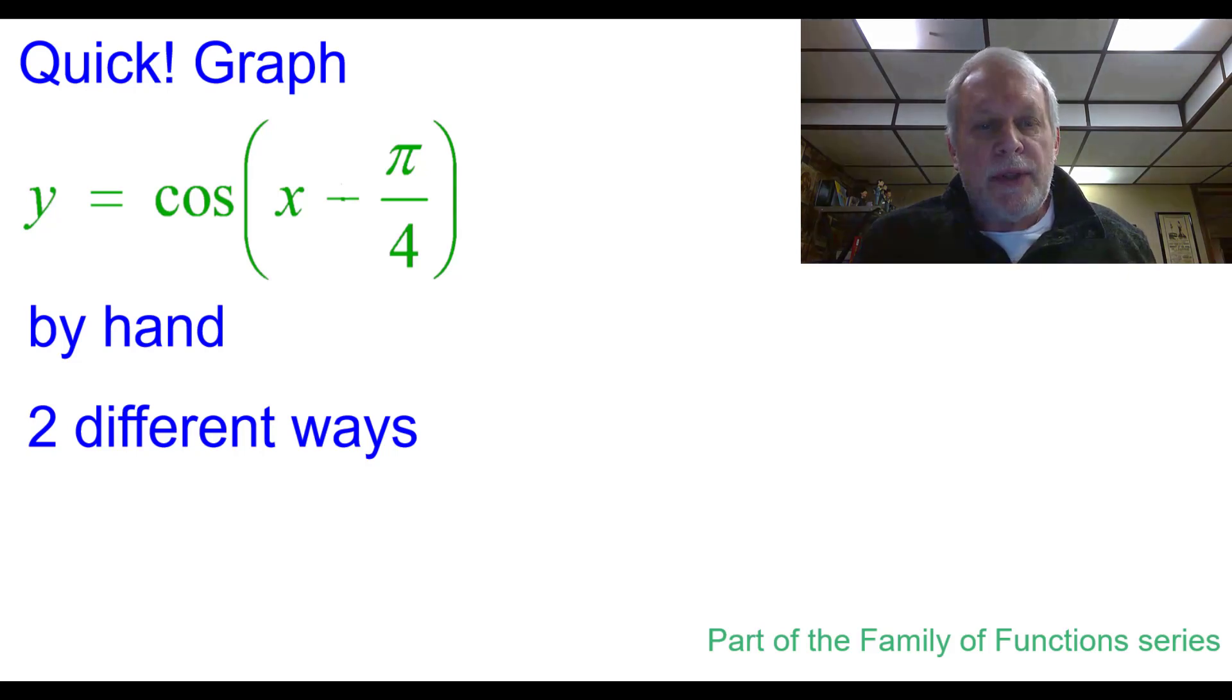Quick, graph y equals the cosine of the quantity x minus pi over 4, by hand, two different ways.